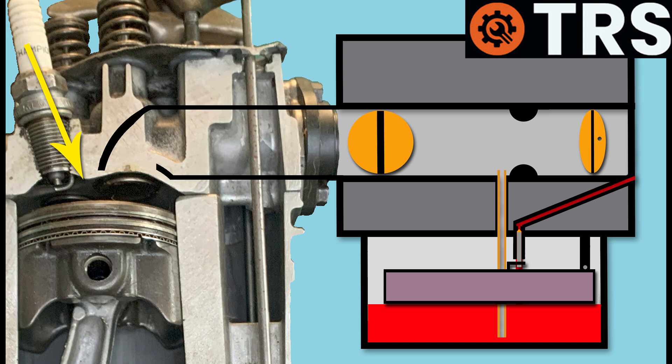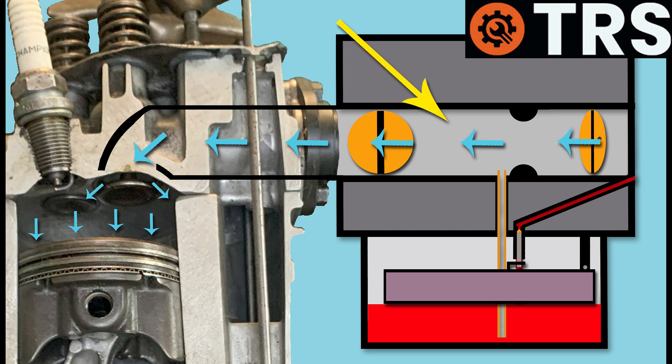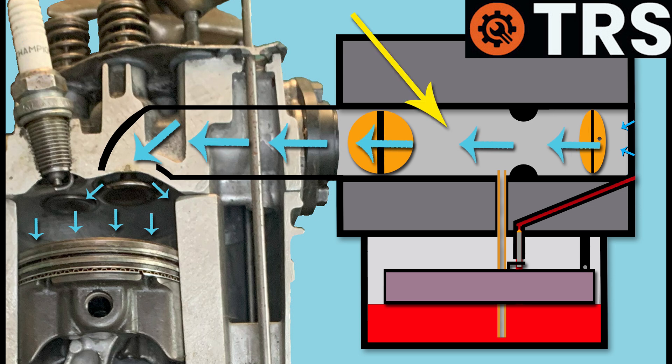As it did so, it created a suction pressure above it, which is felt all the way up through the induction tube of the carburetor. And because the choke plate, or the choke butterfly, is closed, thus restricting air coming into the carburetor, that pressure builds up inside the induction tube. And so this increased amount of suction pressure is felt all the way down the main jet.